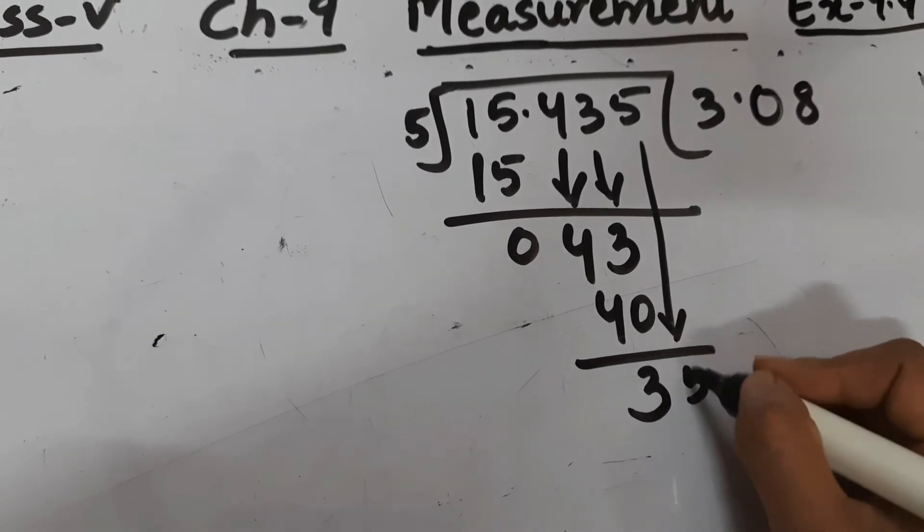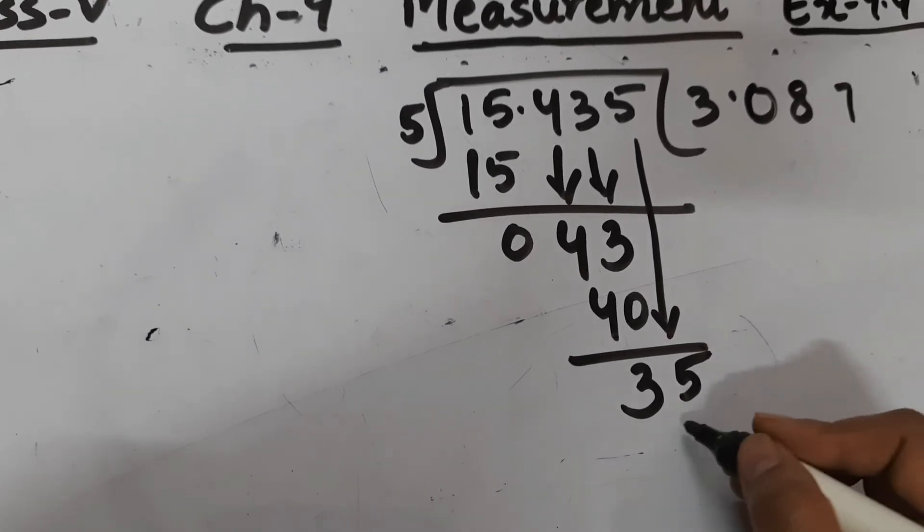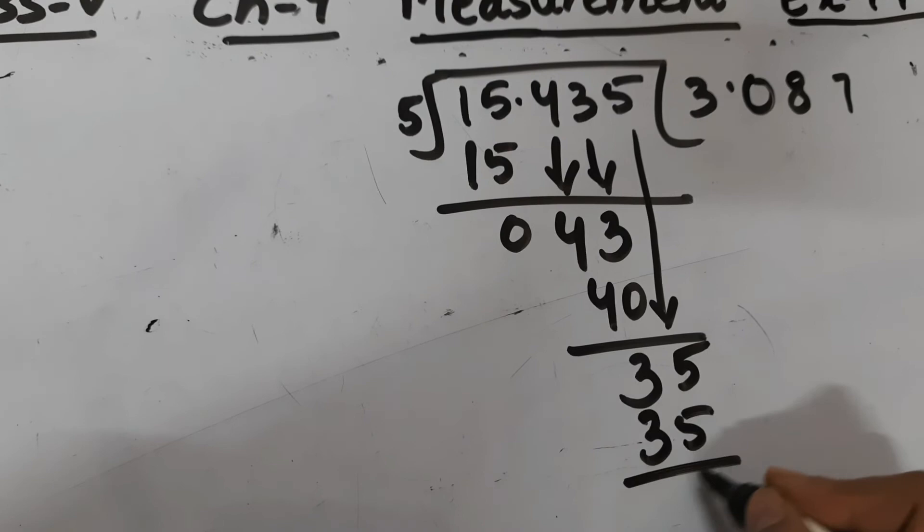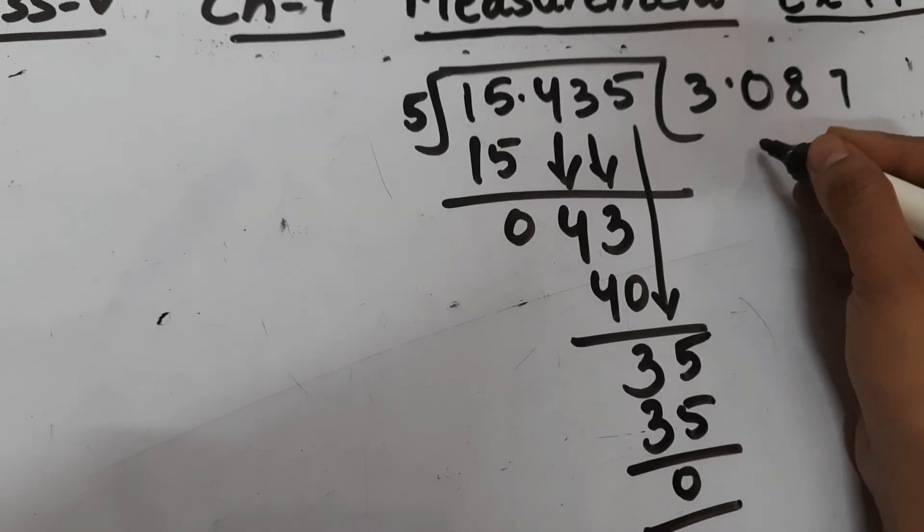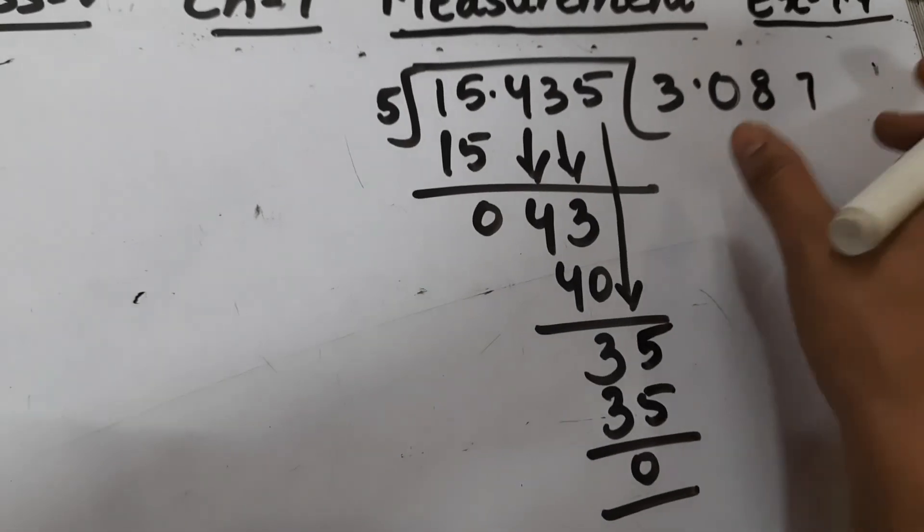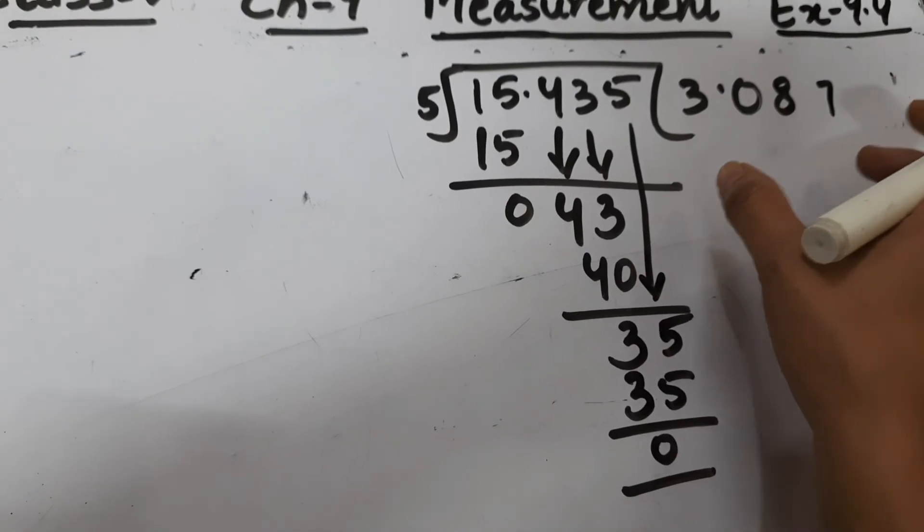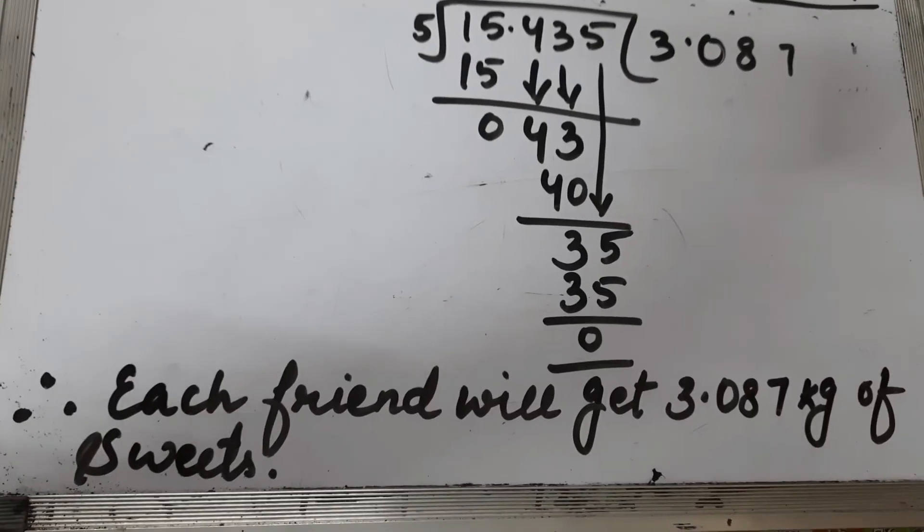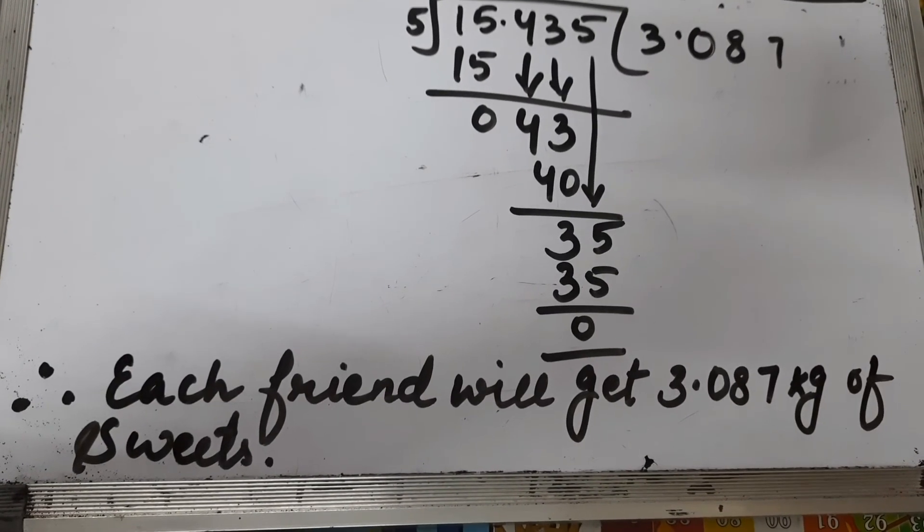Five sevens are thirty-five. So your quotient is 3.087. Each friend will get 3.087 kg of sweets.